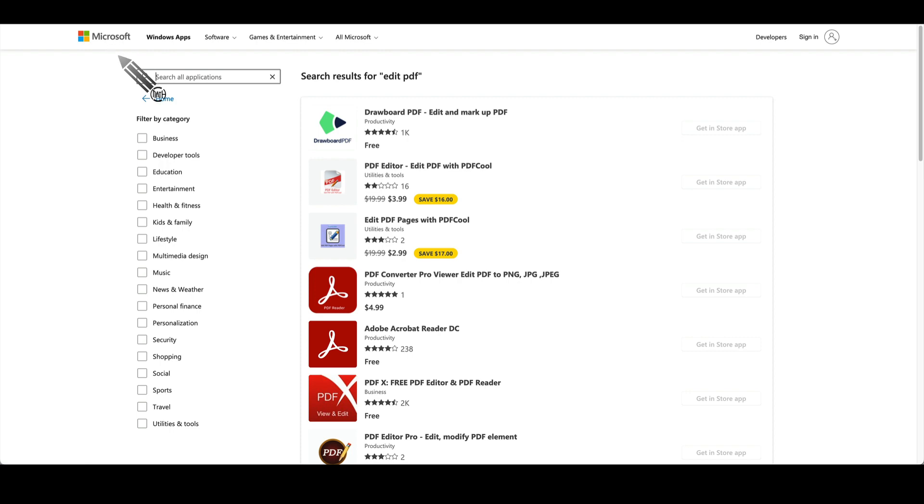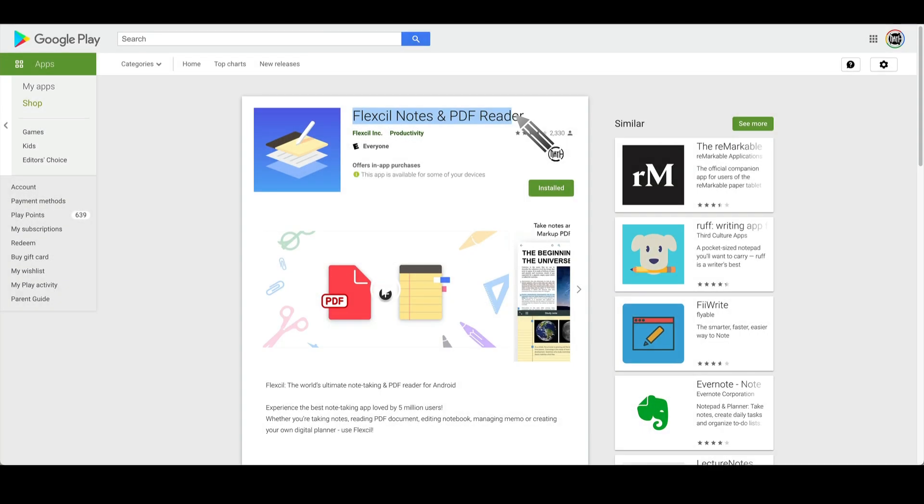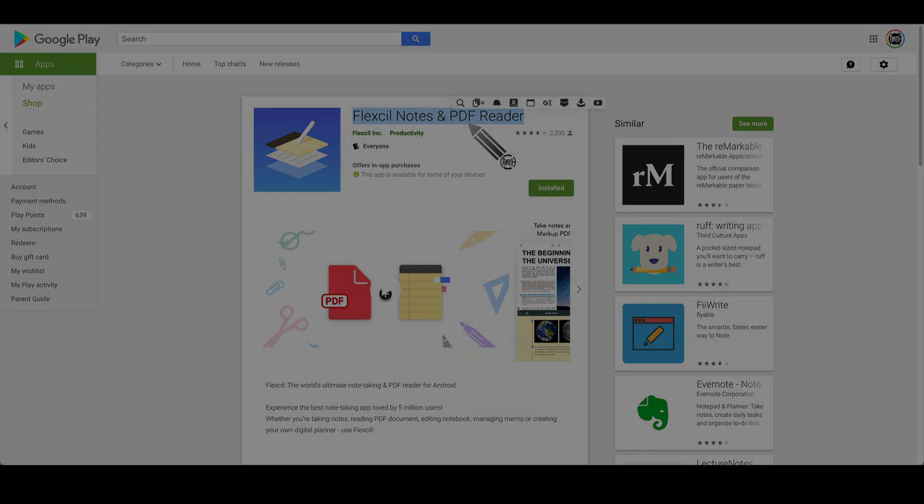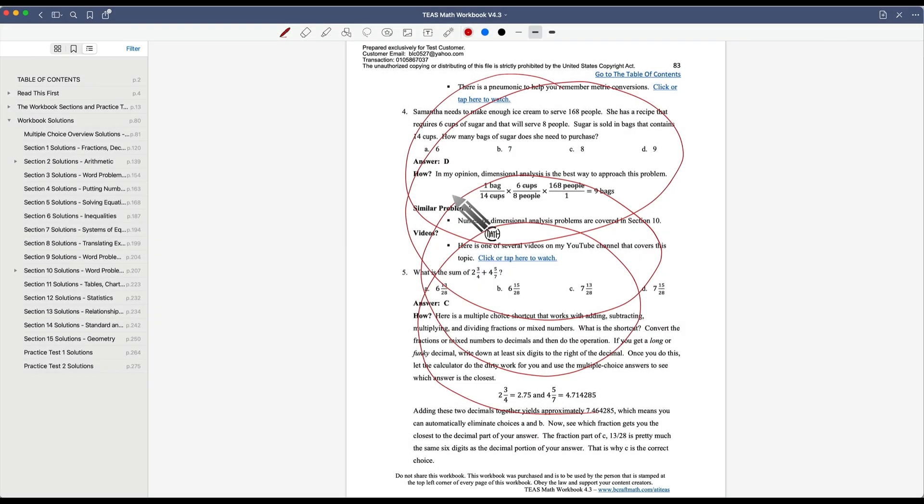Now, if you have an Android, there is an app I use called Flexcil. This app is similar to GoodNotes, but this is for Android devices. You can import those documents. You can write right over top of them. And it's very similar to GoodNotes. But again, this is for Android devices.